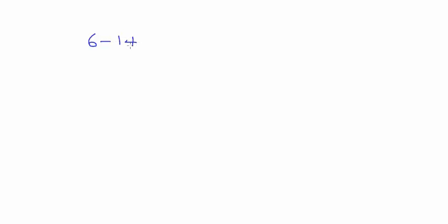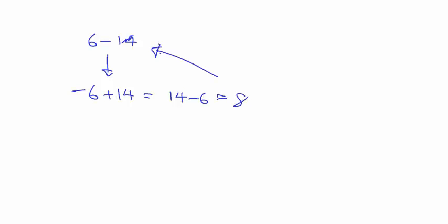Say you've got six minus fourteen and you can't do that directly. Think about minus six plus fourteen - this is the same as fourteen minus six. That gives you eight. So the answer to six minus fourteen is minus eight.